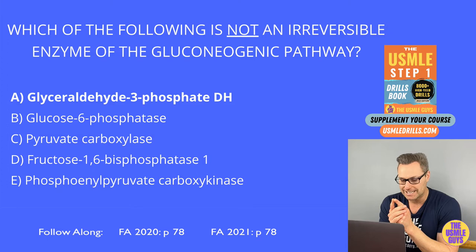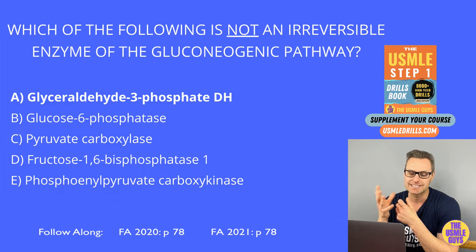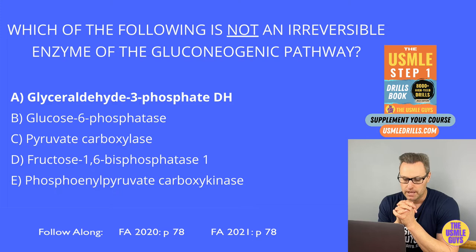PEP carboxykinase is next. PEP is phosphoenolpyruvate. This enzyme is found in the cytosol, and it converts oxaloacetate into phosphoenolpyruvate. This step requires GTP.